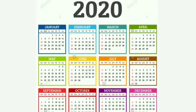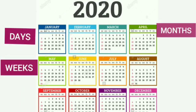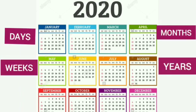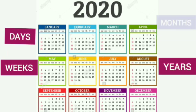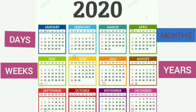This is a calendar chart. It tells us about days, weeks, months and years. Let's learn about various months of the year with the help of this calendar chart.